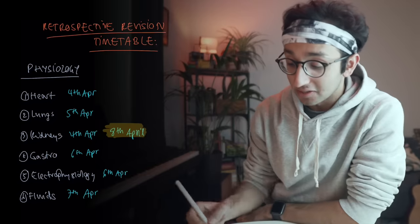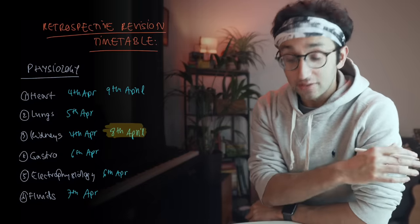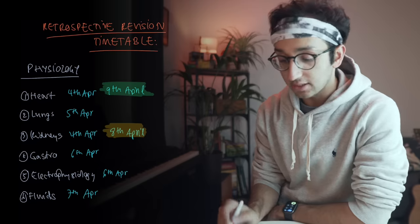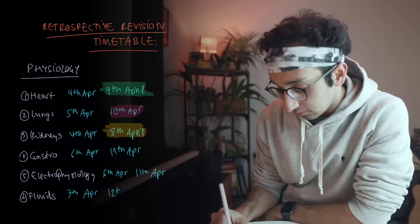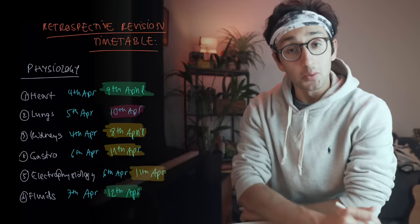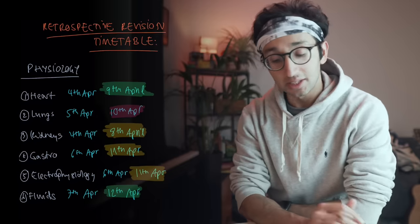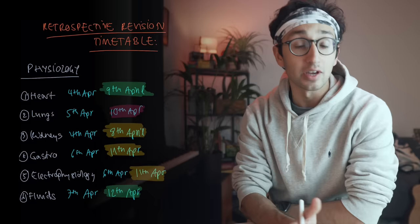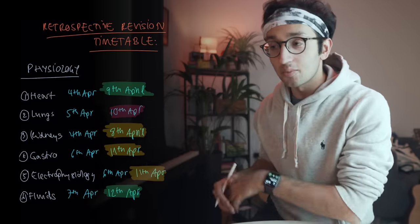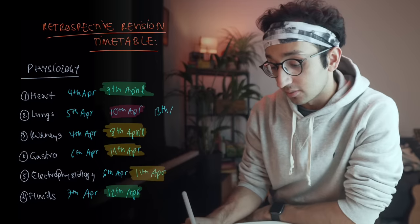Now let's say it's the 9th of April — I do the heart, and having answered the active recall questions I set for myself on the 4th, I think I'm actually pretty good at the heart, so I colour that in green. Now on the 13th of April, I look down this list and see it's been a while since I studied the kidneys — but the kidneys are yellow, and even though I studied the lungs on the 10th of April, they were red at the time. So I'm going to prioritise the lungs. The question I ask myself each day is: if the exam were tomorrow, which topic would I be least happy about? Currently I'm least happy about the lungs, which is why I'm going to revise them on the 13th.